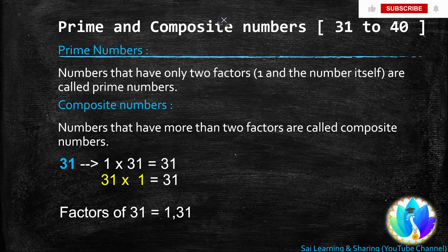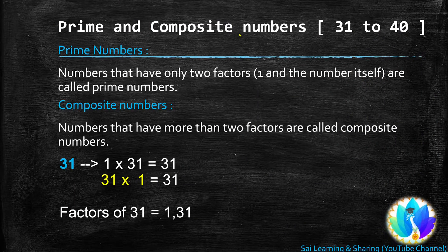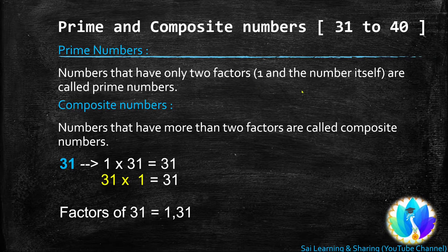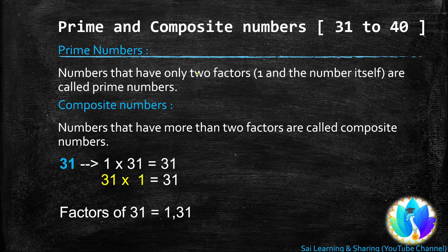Prime and composite numbers. How to find a number prime or composite? We have to find all the factors of the number. Then only you can say the number is prime or composite. We know a prime number has only two factors, but a composite number has more than two factors.